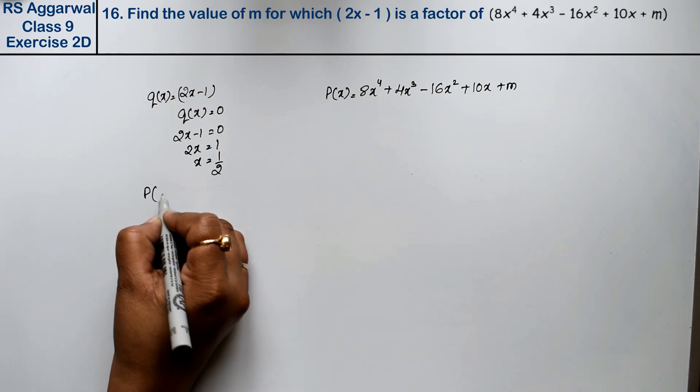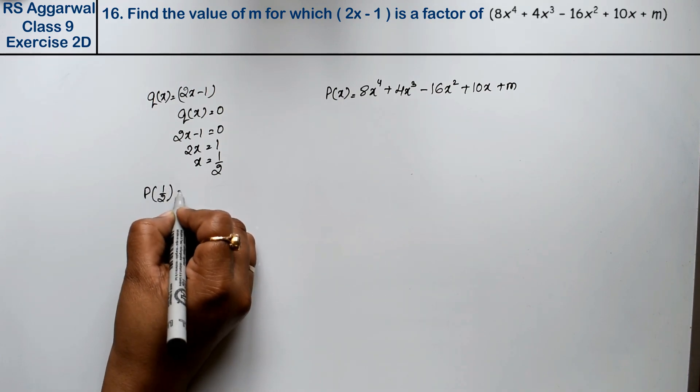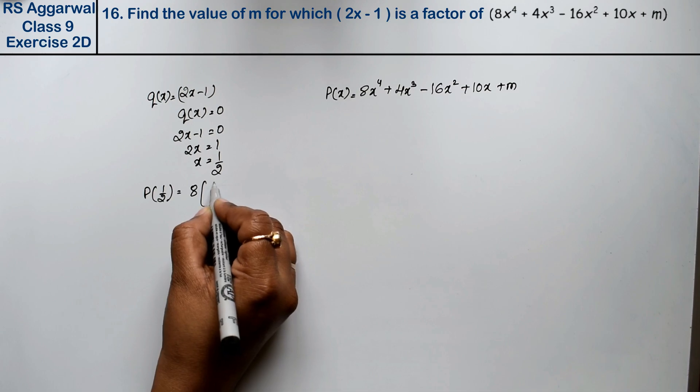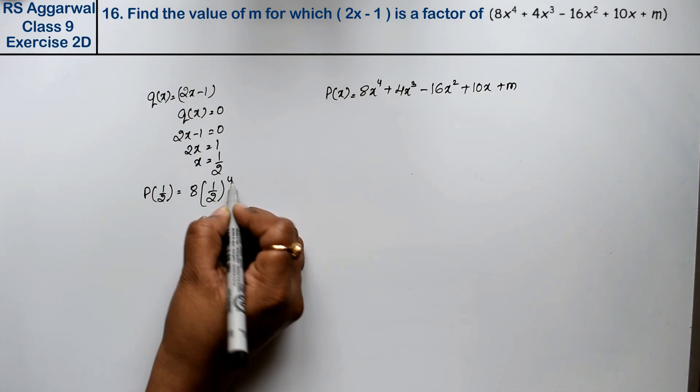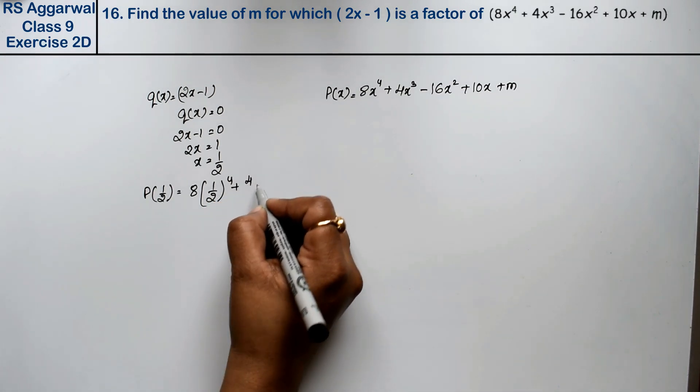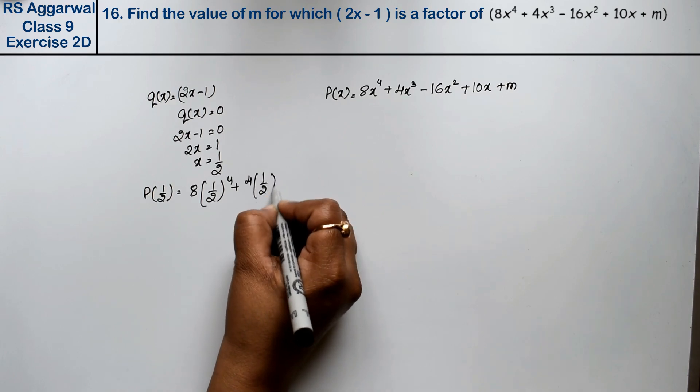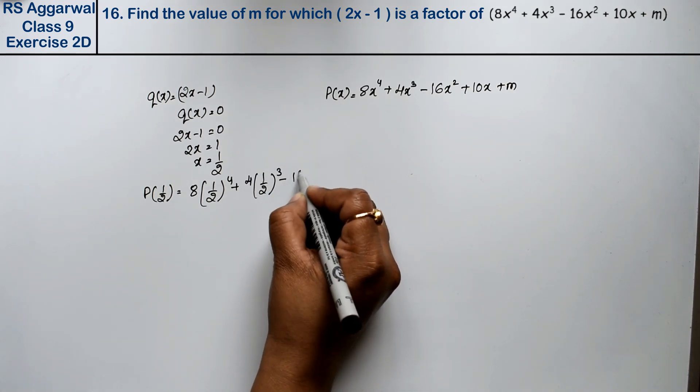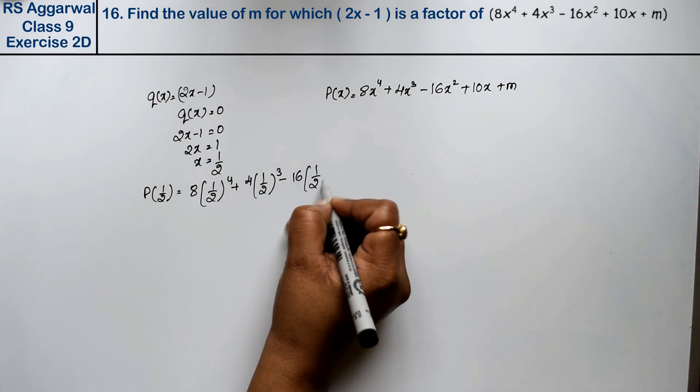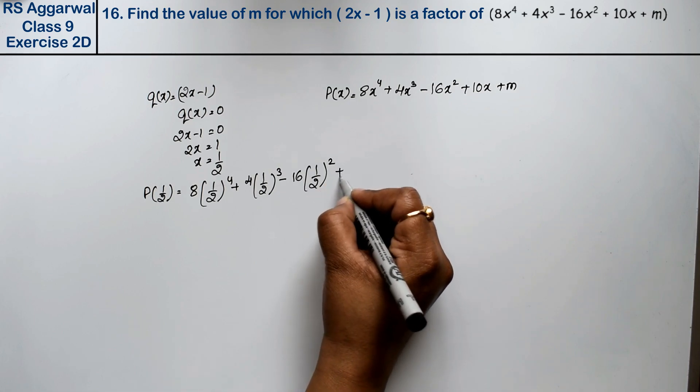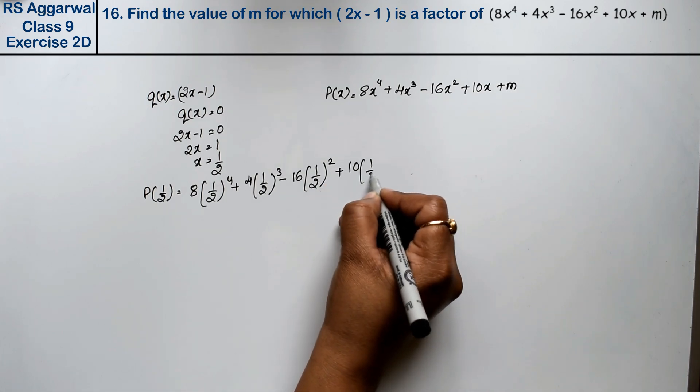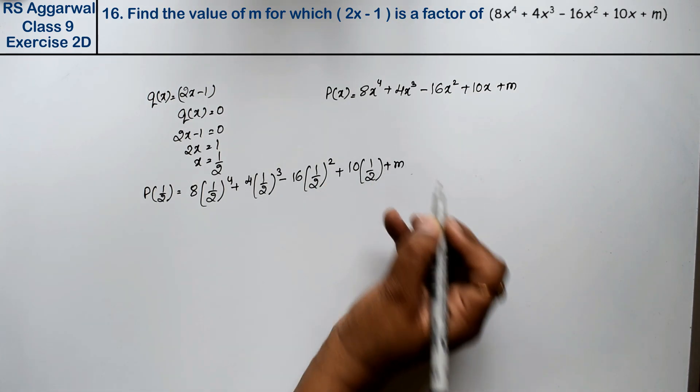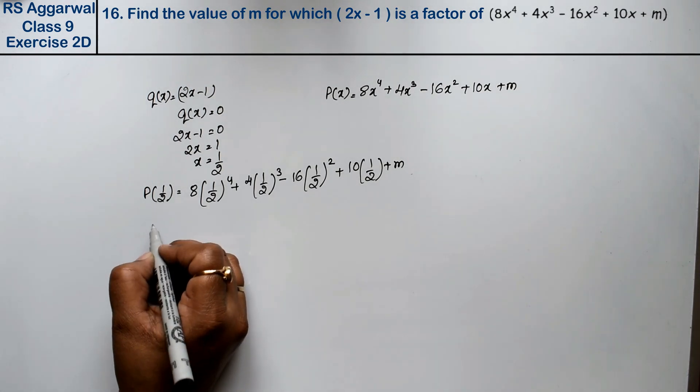Now we substitute x equals 1 upon 2 into P(x). So 8 into 1 upon 2 to the power 4, plus 4 into 1 upon 2 to the power 3, minus 16 into 1 upon 2 to the power square, plus 10 into 1 upon 2, plus M. Since this is a factor, this equals 0.